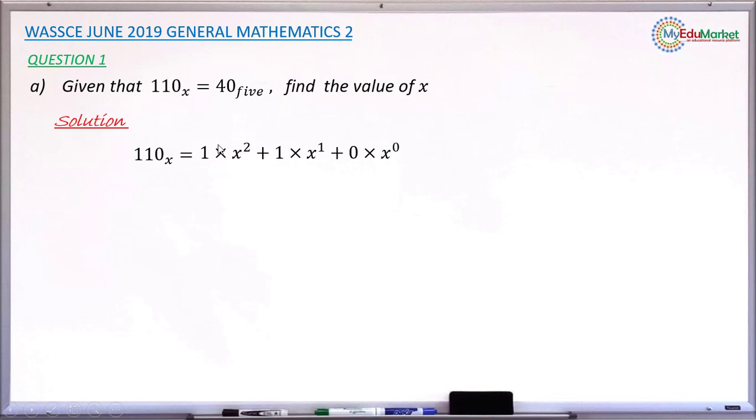x raised to the power of 2 times 1 is x squared. x raised to the power of 1 times 1 is x. And x raised to the power of 0, which is 1 times 0, is 0. So at the end, you have x squared plus x as the simplified form.